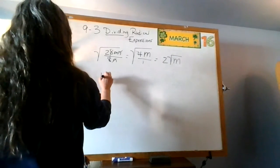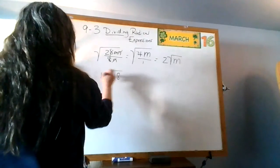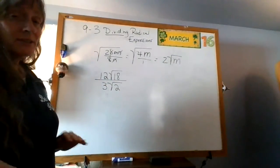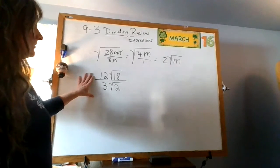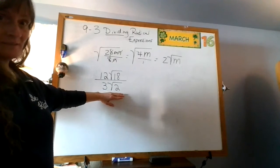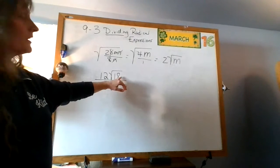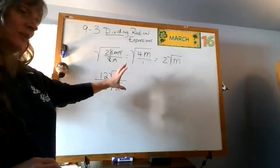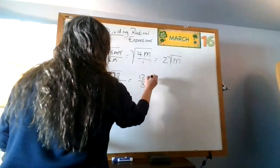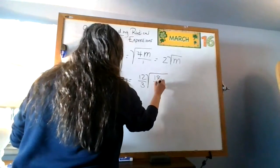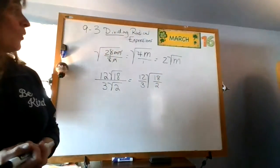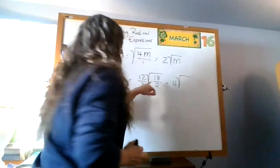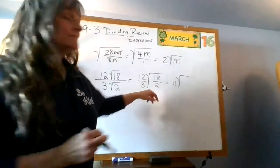Let's say I had 12 times the square root of 18 divided by 3 times the square root of 2. Now I'm going to look at this and say — 18 isn't a perfect square. But what if I put these together? Remember, if I have them separate, I can also put them together. So I'm going to do this: 12 over 3 times the big square root of 18 divided by 2. What's 12 divided by 3? That would give me 4. And inside my square root, 18 divided by 2 gives me 9.